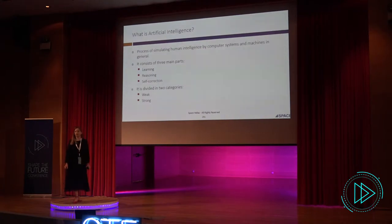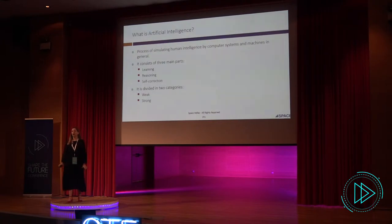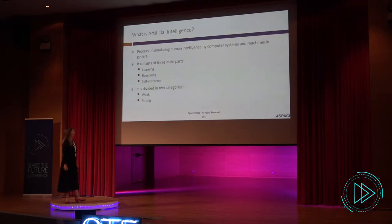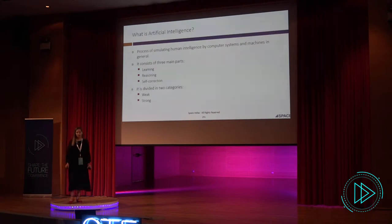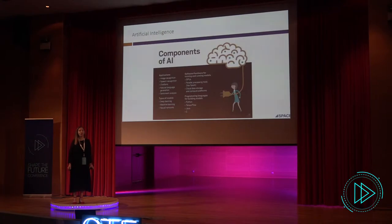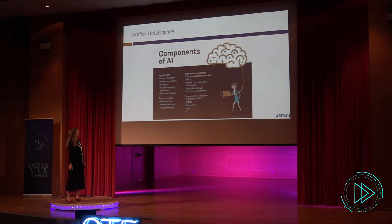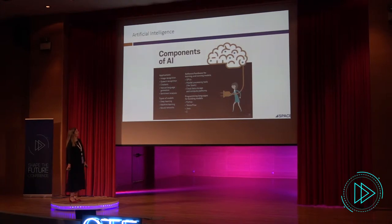Artificial intelligence — a very short definition — is how to make computer systems and machines in general be able to use human intelligence. It consists of three main parts: learning, reasoning, and self-correction. It can be divided into two categories: weak or strong. AI has applications, types of models, software, hardware for training, and programming languages for building these processes. Applications can be image or speech recognition, or cybersecurity.